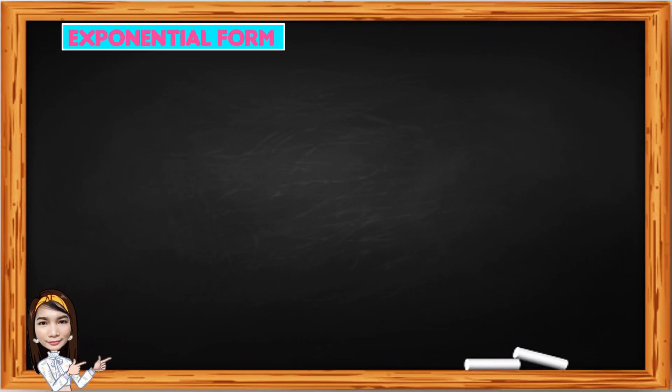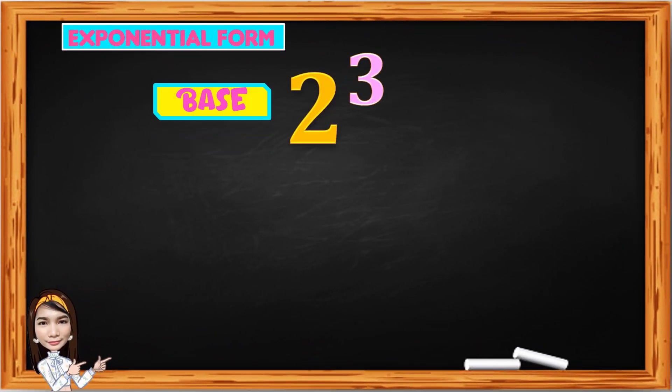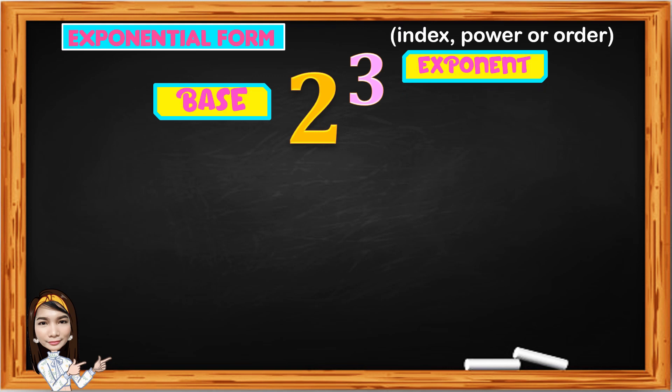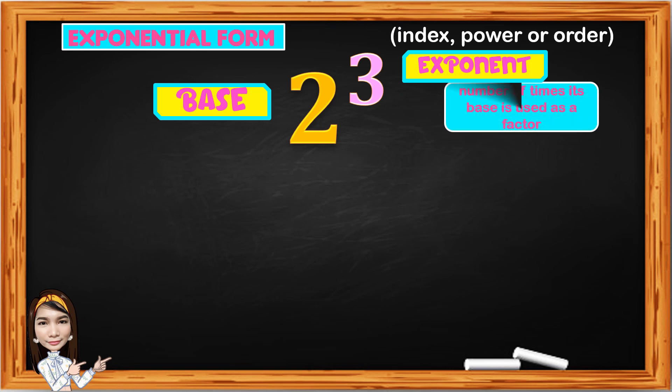Now let's have 2 cubed. 2 is the base and 3 is the exponent, also known as the index, power, or order. Exponent indicates the number of times its base is used as a factor. And to indicate repeated multiplication, we can use natural numbers.